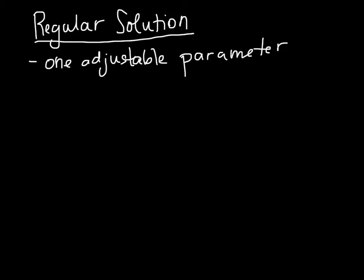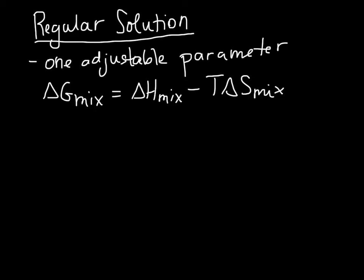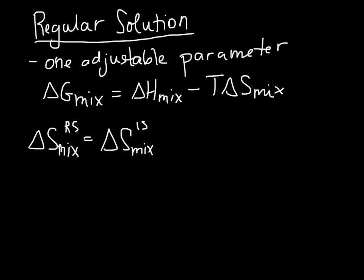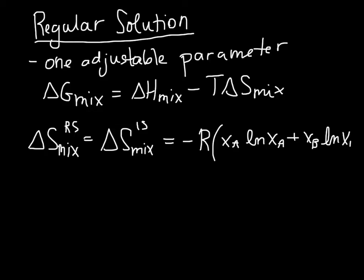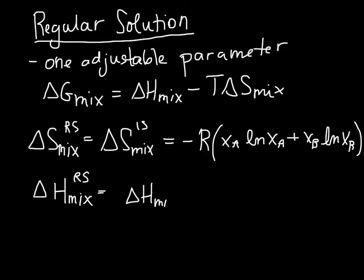There are two components to delta G of mixing: delta H mix minus T times delta S mix. We are going to say that delta S of mixing for the regular solution model is the same as in the ideal solution model — it's really just configurational entropy — and that turns out to not be a bad assumption. The difference comes in with the enthalpy of mixing, which we will now allow to be a function of composition.